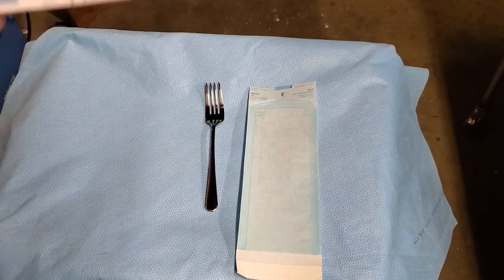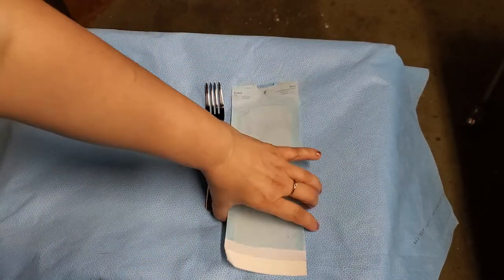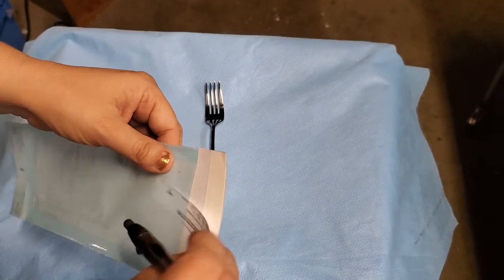On here we need to put the date that we are autoclaving and then your initials. So my initials and today's date. This goes in here that lets me know that the inside of this is going to be sterilized, not just the packet itself.